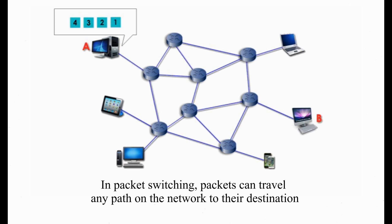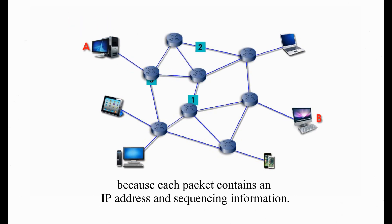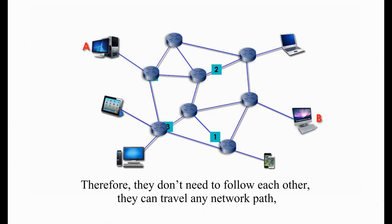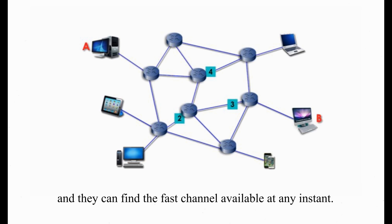In packet switching, packets can travel any path on the network to their destination, because each packet contains an IP address and sequencing information. Therefore, they don't need to follow each other. They can travel any network path, and they can find the first channel available at any instant.